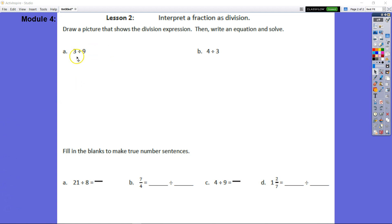We're going to look at this division problem here, 3 divided by 9. Normally our dividend is larger than our divisor. Usually we have something like 9 divided by 3, which gives us 3. Here we know this is going to give us less than a whole. The directions tell us to draw a picture that shows the division expression, then write an equation and solve. Let's go ahead and create the picture.